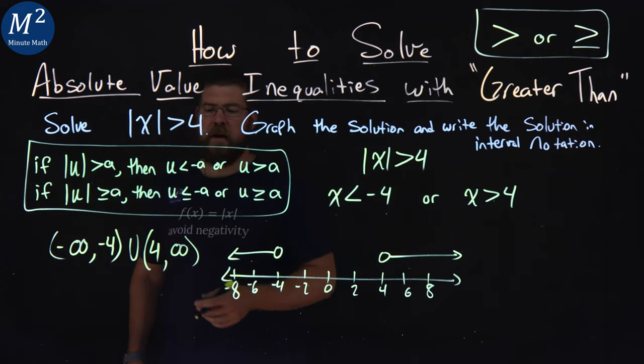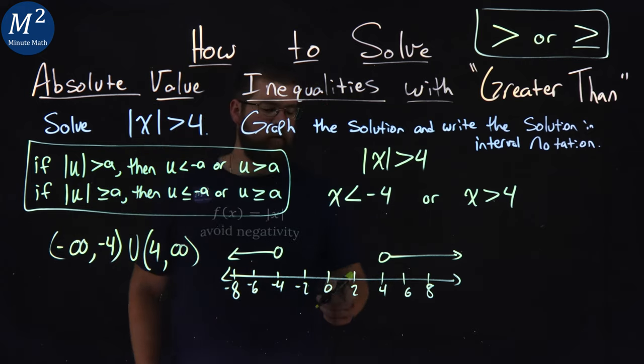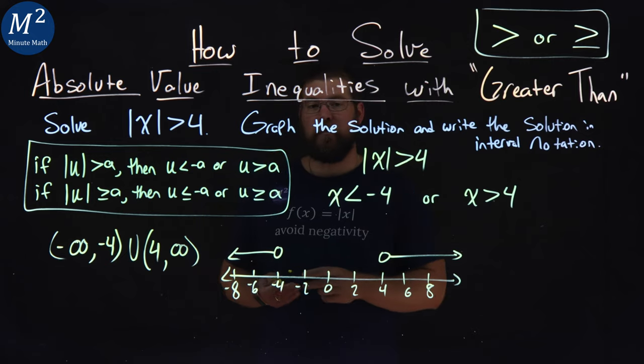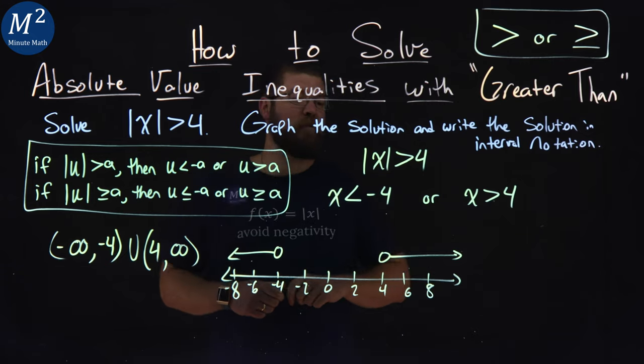And there we have it. We have our answer in interval notation, as well as the graph of our solution for this absolute value inequality that's greater than 4.